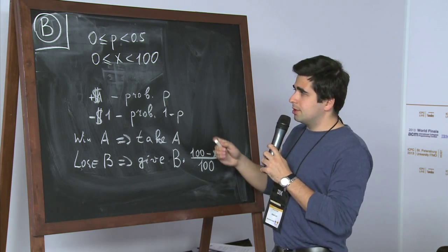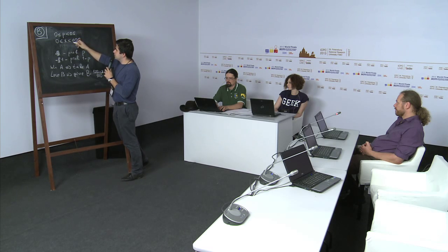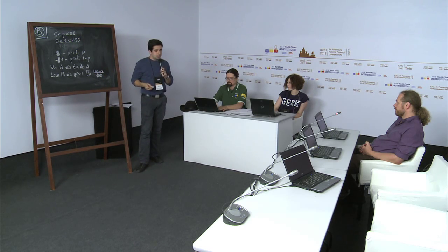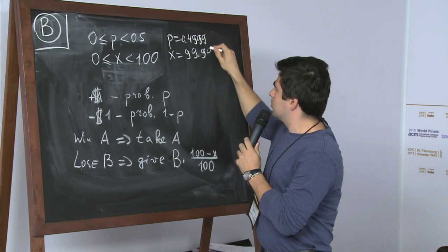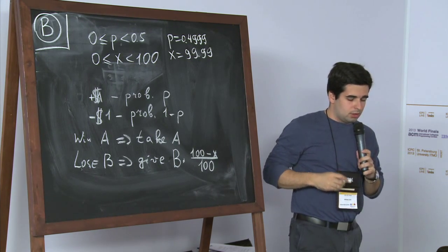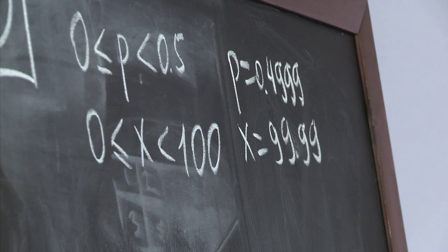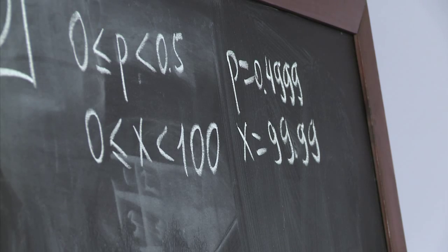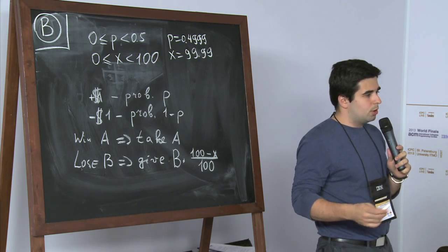You can guess that the worst case where A and B should be the maximum possible are when X is close to 100 and P is close to one half. And if you take the extremum case, then you can find out on your computer by experimenting that A and B should be no more than something around 20,000. And if A and B are around 20,000, then the brute force up to 20,000 on both values will go into time limit.